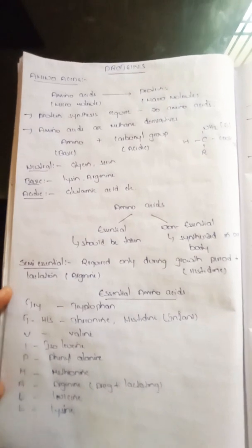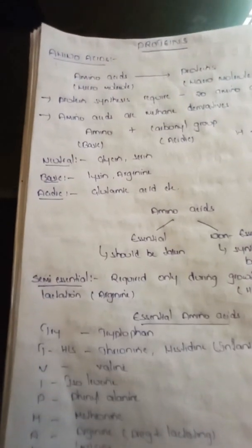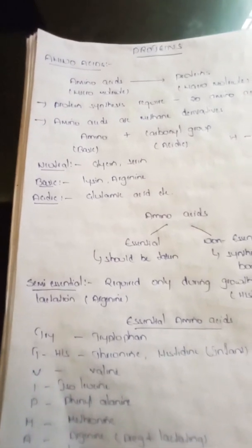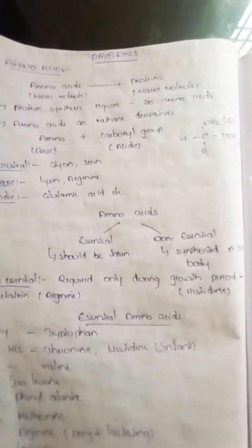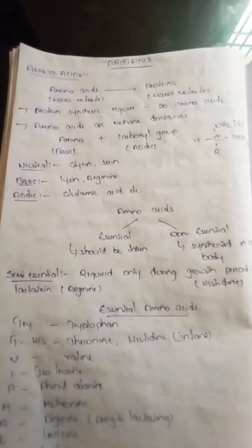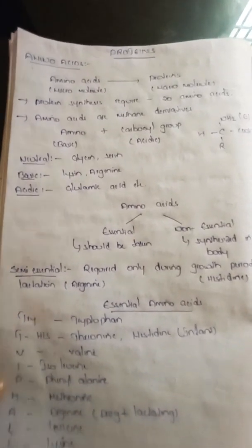We also have semi-essential amino acids. These are important during certain life stages — particularly the growth period. Histidine is an example, and it is especially important during pregnancy and lactation.